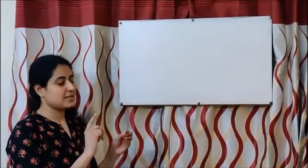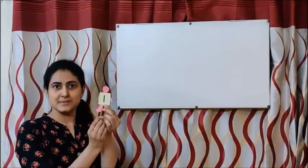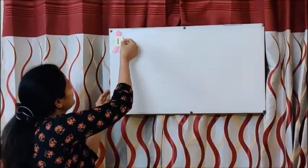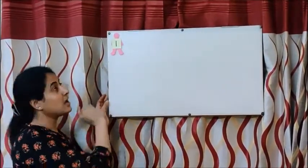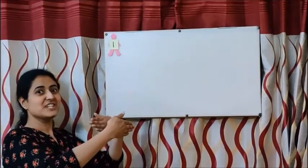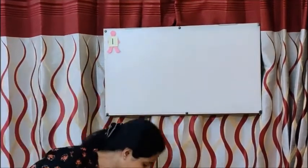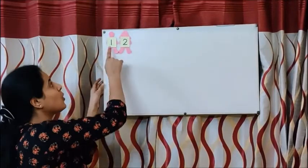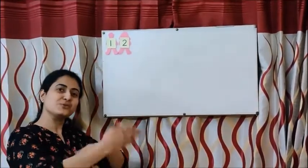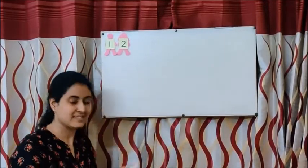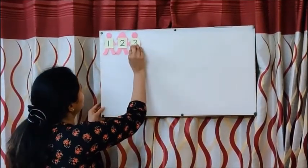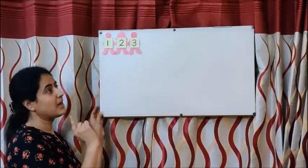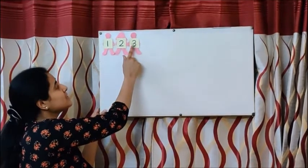First, you have to tell me what number is this? Yes, this is one. And what comes after one, children? Correct — two. One, two. What comes after two? Three. Yes, three. So you have to say with me now: one little, two little, three little Indians.